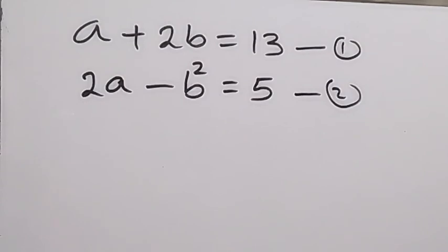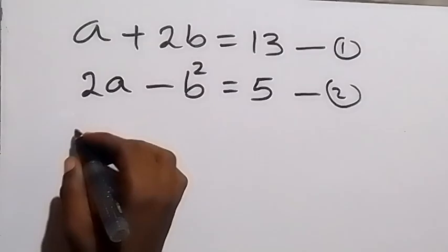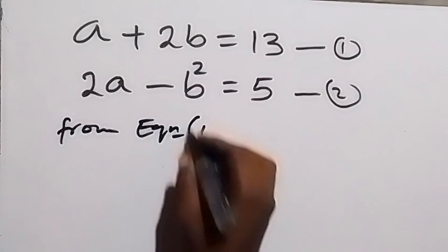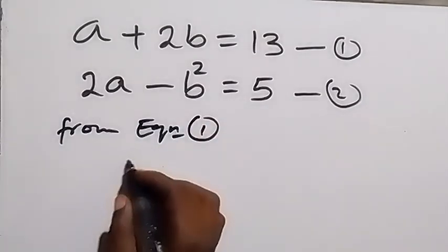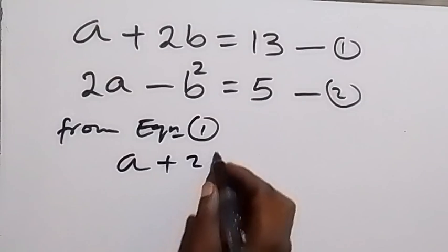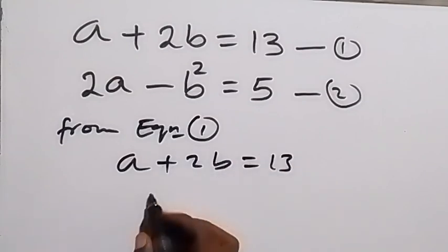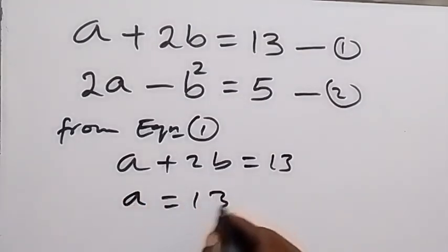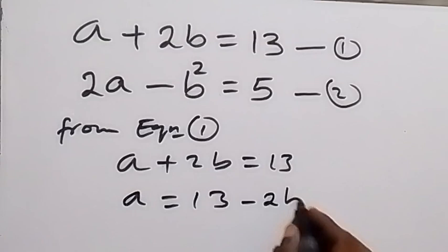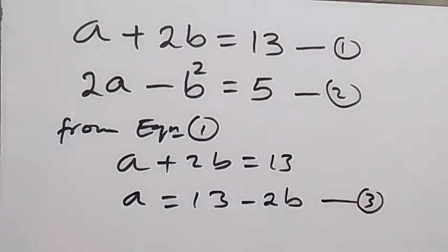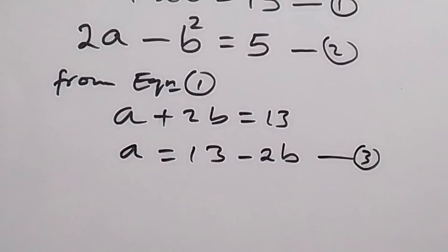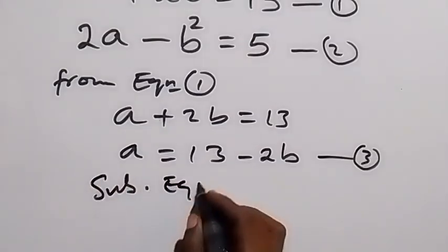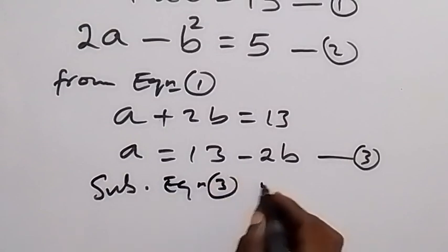From equation 1, let's make a the subject of the formula. We have a plus 2b equals 13, so making a the subject, we take 2b to the other side and we have a equals 13 minus 2b. Let's call this equation 3. Now substitute equation 3 into equation 2.